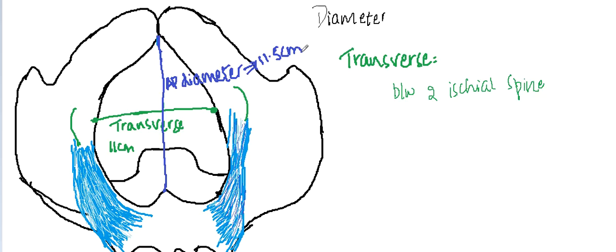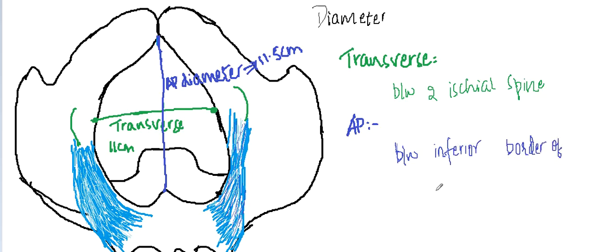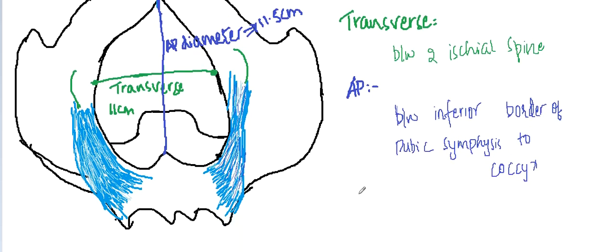There is also the posterior sagittal diameter. The anteroposterior diameter is present between the inferior border of the pubic symphysis to the coccyx.